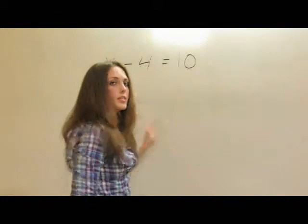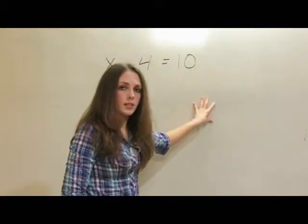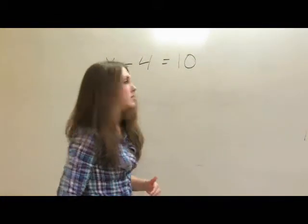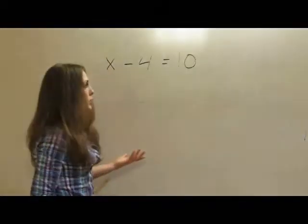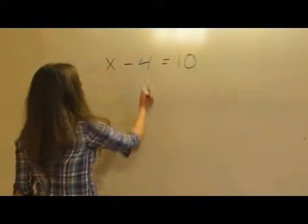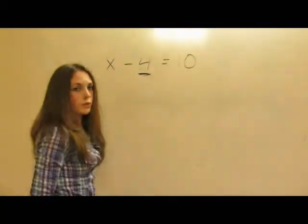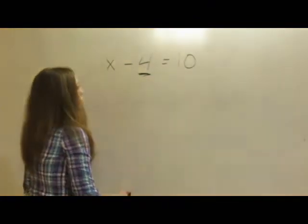To do that we need to do the same thing to the left side as we do to the right side. That will help us solve for x. So we have x minus 4 equals 10. We want to get rid of this 4 here because we want x by itself, so we can add 4 to each side of the equation.